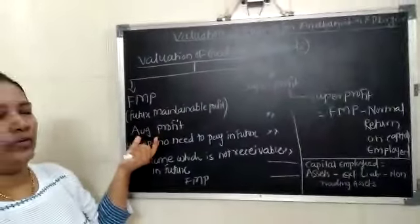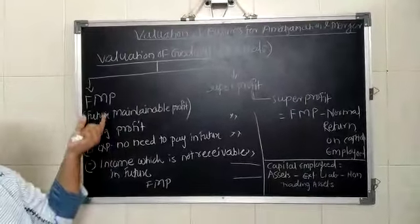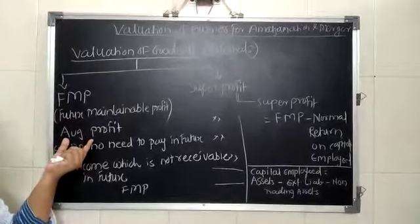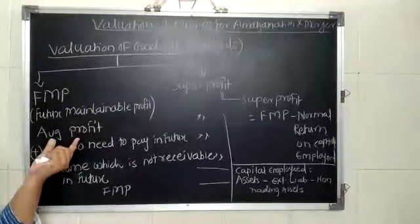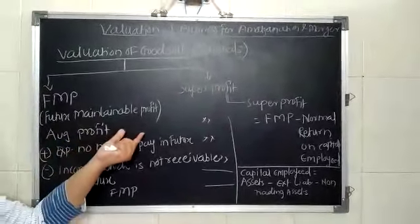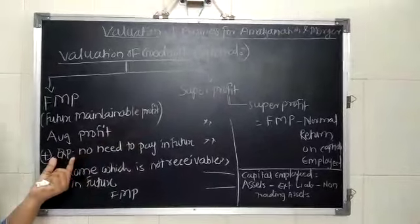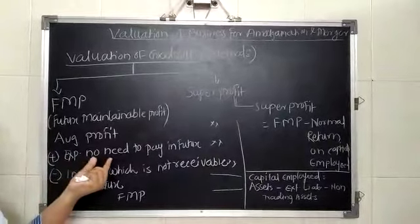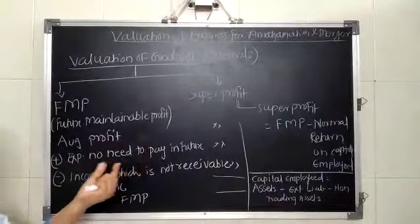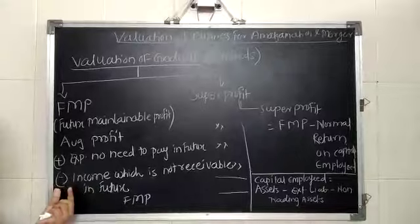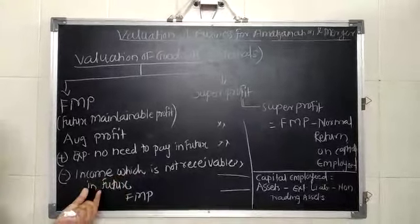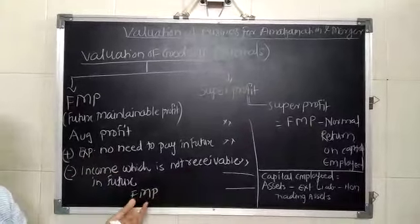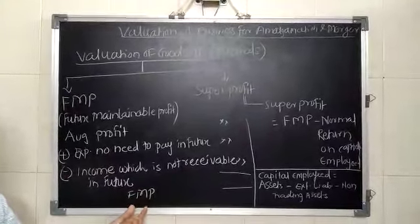And on that basis only they are going to purchase a business. Now here we have to calculate FMP. For that first we have to calculate the average profit, that is the total of last 4-5 years profit divided by the number of years. And in this we have to add the expenses which is not needed to pay in the future, as well as we have to deduct the income which is not receivable in future. So accordingly we will get the adjusted amount and that is known as future maintainable profit.